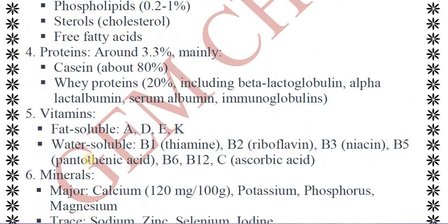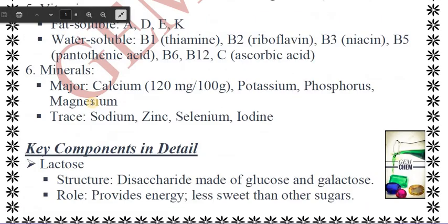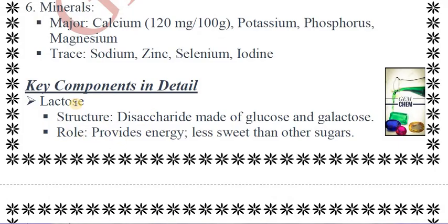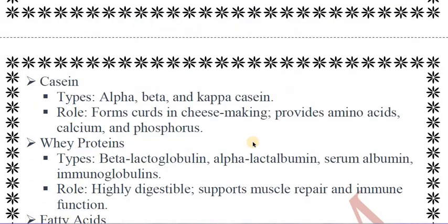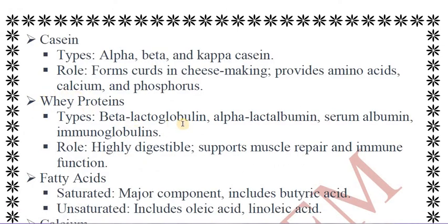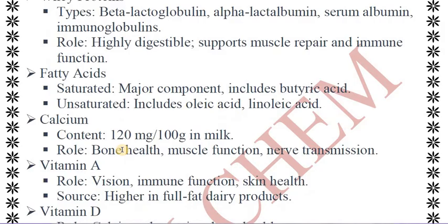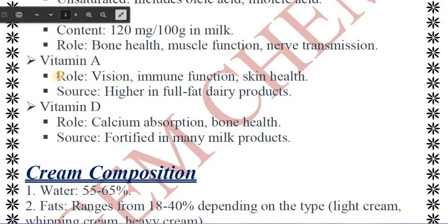What is important from a chemistry perspective is what the proteins are made up of, their structure, and their role. For example, lactose is a disaccharide made up of glucose and galactose; its role is to provide energy and it is less sweet than sugar. Casein exists as alpha, beta, and kappa casein; it helps make curd and plays a role in cheese making. Whey protein contains beta-lactoglobulin, alpha-lactalbumin, and others. Fatty acid types, calcium content, and vitamin content are also detailed.